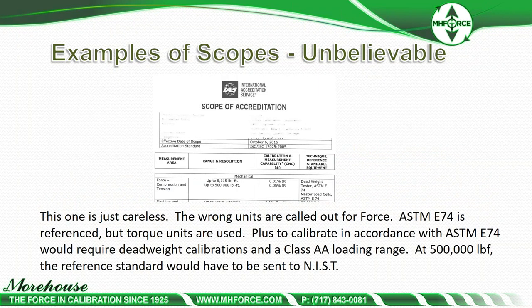Here's one that is just careless: the wrong units are called out for force. They say they do deadweight E74, but if you look over here, they're citing 'pound-feet' — which is torque, not force. They claim to do E74 calibrations with master load cells, but they're saying 'pound-feet.' To calibrate in accordance with ASTM E74 at half a million pounds would require deadweight calibrations in the Class AA loading range, meaning the reference standard would have to be sent to NIST. I know who this lab is — they're not sending their standards to NIST. This is a garbage scope, and shame on the auditor for not picking up the wrong units.